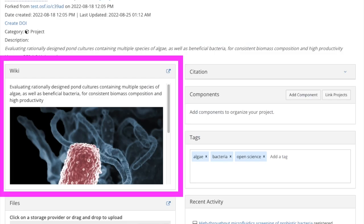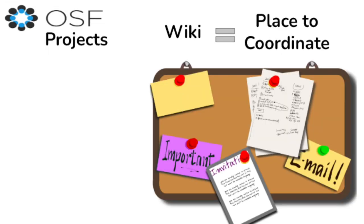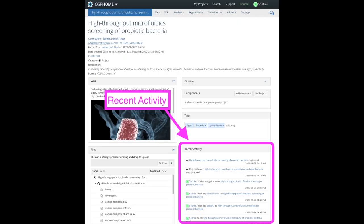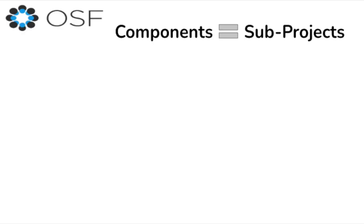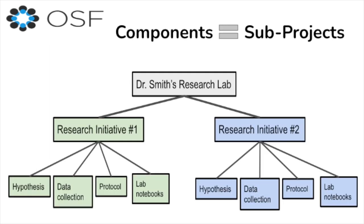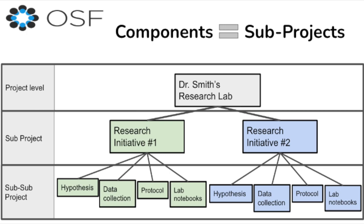Sophia uses the wiki section on her project as a bulletin board. She's able to coordinate with her team members, leaving messages about objectives and plans, and making sure everyone is on the same page throughout the entire project. All of Sophia and her team's activities on the project are included in an activity log, tracking the various changes to files and organization. Any changes to her project space do not affect her initial pre-registration. As Sophia's study grows, she creates a directory of materials in her OSF project by creating sub-projects or components, and can create as many as she needs for her study.